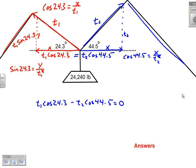Likewise, this y component on T2 could be listed as T2 times sin 44.5. But those are not equal—they are applying a force together, holding this weight up in the air. Together they're holding 24,240 pounds, so the sum of the y components of our vectors must equal 24,240.